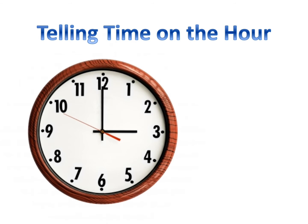Let's look at this clock, boys and girls. There is a red hand on the clock — remember, that's the seconds hand and we're not paying attention to that right now; you'll learn about that in third grade. The minute hand is straight up to the 12 and the hour hand is pointing to the 3. What time is it, boys and girls? It's 3 o'clock.